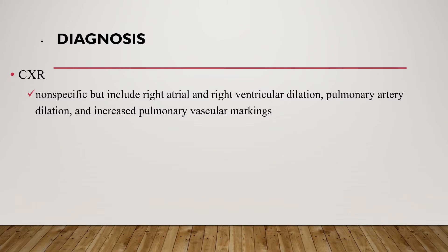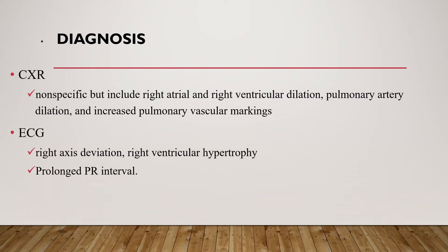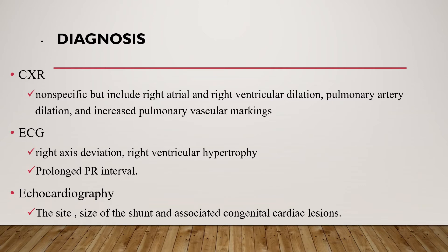Regarding diagnosis, chest X-ray is important and shows nonspecific but includes right atrial and right ventricular dilation, pulmonary artery dilation, and increased pulmonary vascular markings. On ECG, right axis deviation, right ventricular hypertrophy, and prolonged PR interval can be seen. On echocardiography, the size of the shunt and associated congenital cardiac lesions can be seen.